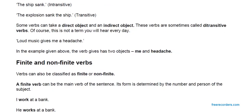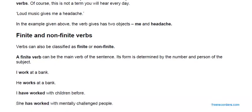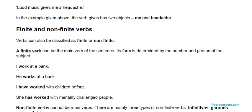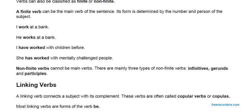Finite and Non-finite Verbs. Verbs can also be classified as finite and non-finite. A finite verb can be the main verb of the sentence; its form is determined by the number and person of the subject — for example, 'I work at a bank,' 'He works at a bank,' 'I have worked with children before,' 'She has worked with mentally challenged people.' Non-finite verbs cannot be the main verbs. There are mainly three types: infinitives, gerunds, and participles.